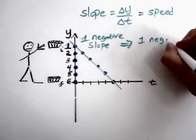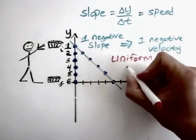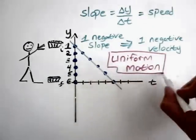So one negative slope means one negative speed, or one negative velocity. It's simply going in what we said is the negative direction. We already decided it's going opposite the positive y.